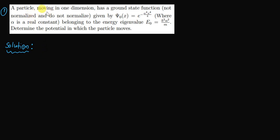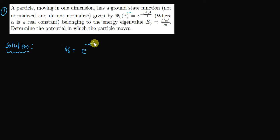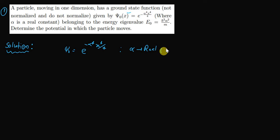First, read the question: a particle is moving in one dimension and has a ground state wave function which is not normalized — do not normalize it — which is given by ψ₀ = e^(-α⁴x⁴/4), where α is a real constant.